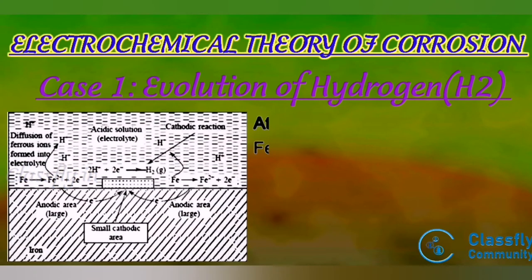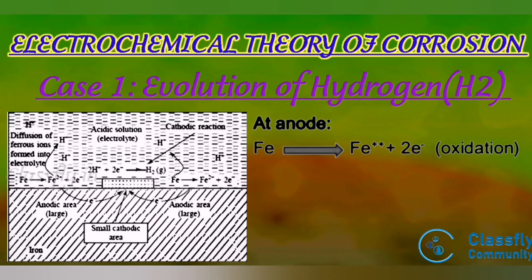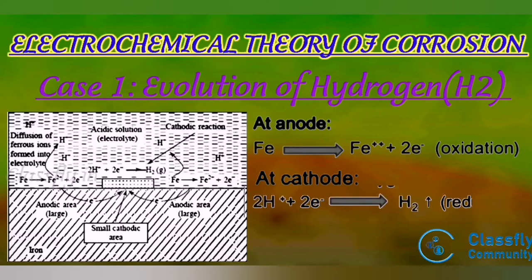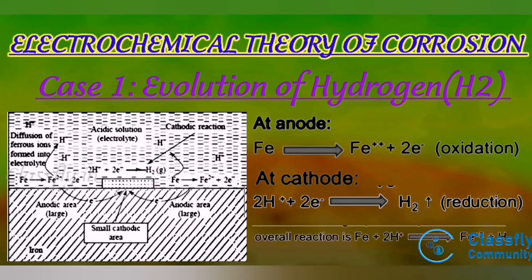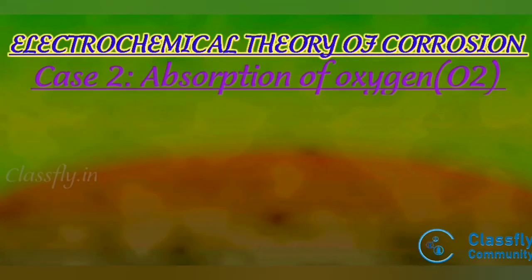In Case 1, at the anode: Fe → Fe²⁺ + 2e⁻ (oxidation takes place). Iron is oxidized to form Fe²⁺. At the cathode, hydrogen ions are formed due to the acidic environment, and in the absence of oxygen: 2H⁺ + 2e⁻ → H₂ gas (reduction occurs). The overall reaction is: Fe + 2H⁺ → Fe²⁺ + H₂.